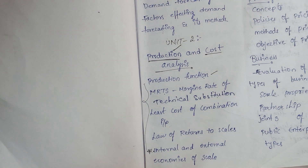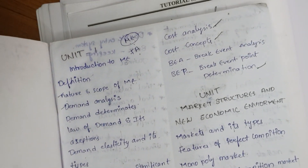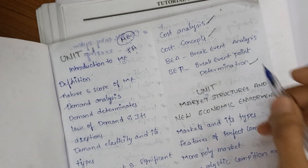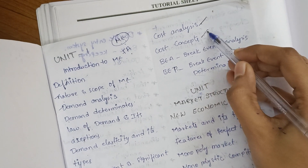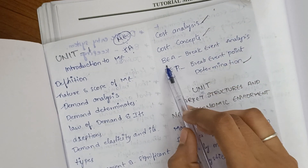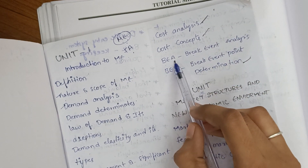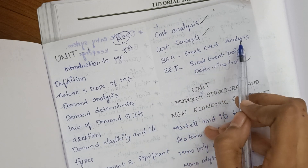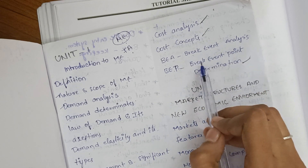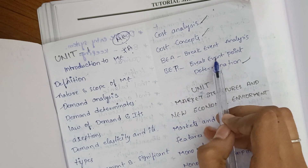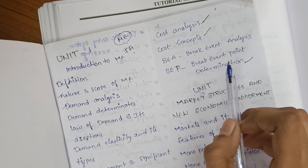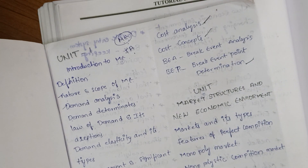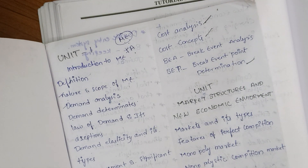The second part is all about cost. That includes cost analysis, cost concepts, BEA (Break Even Analysis), and BEP (Break Even Point). We also have some small problems on break even analysis, so we will go through those as well.